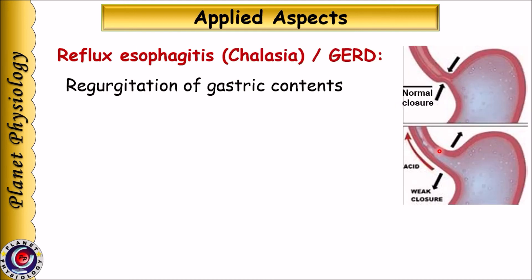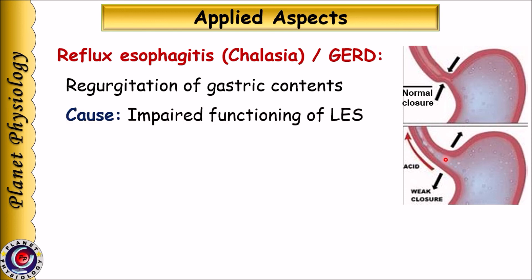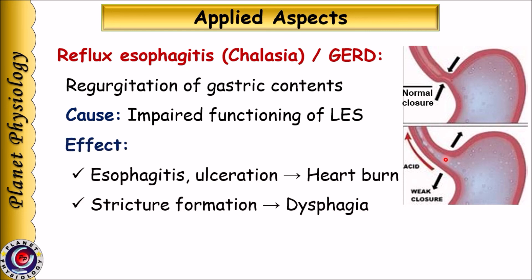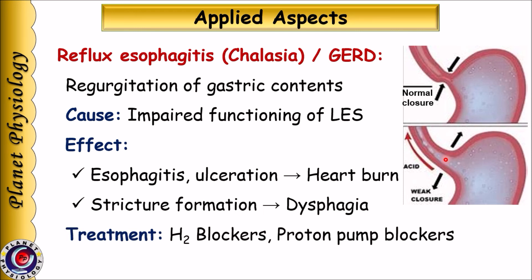The next clinical condition related with deglutation is reflux esophagitis, also called chalasia or gastroesophageal reflux disease (GERD). In this condition, the lower esophageal sphincter is weak and causes regurgitation of gastric contents into the esophagus, leading to esophagitis. Chronic esophagitis can lead to ulcer formation causing heartburn; ulcers heal by forming fibrous tissue, leading to stricture formation and dysphagia. Treatment of GERD is aimed at reducing gastric acidity using drugs like H2 blockers or proton pump inhibitors.